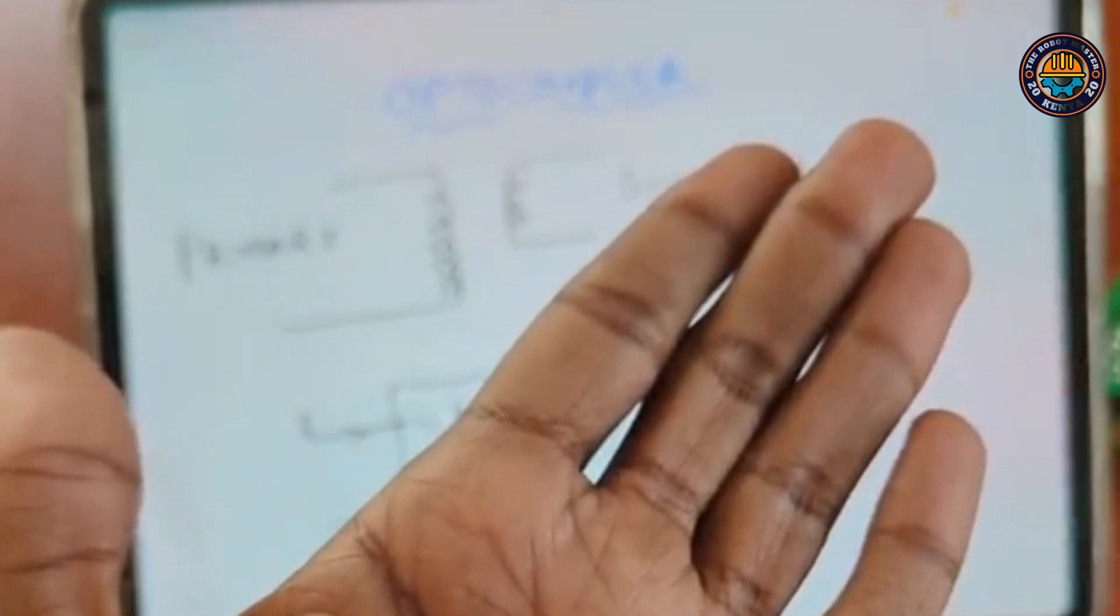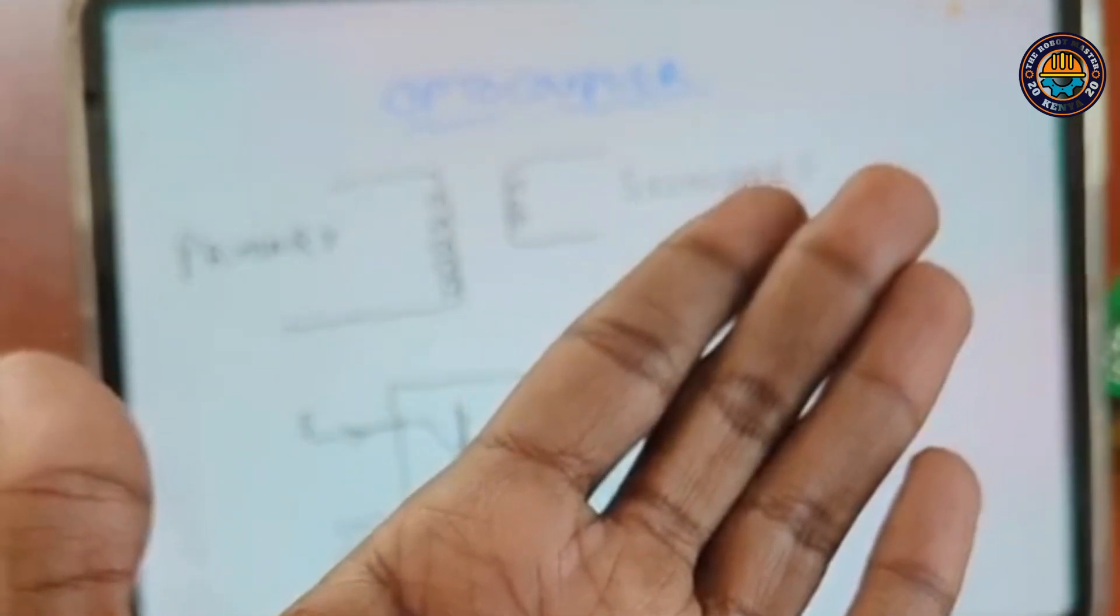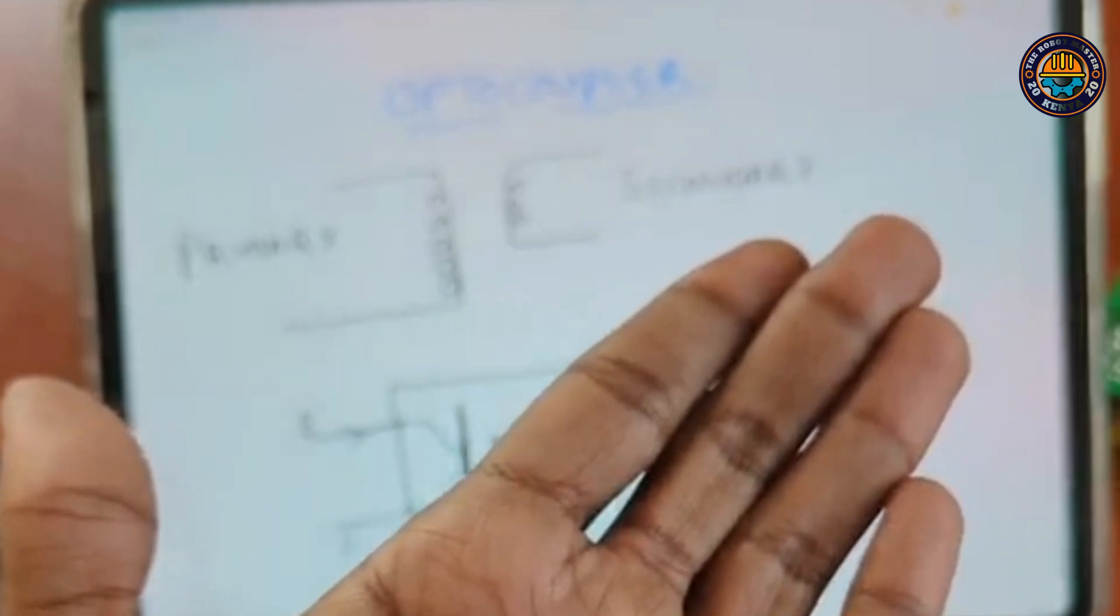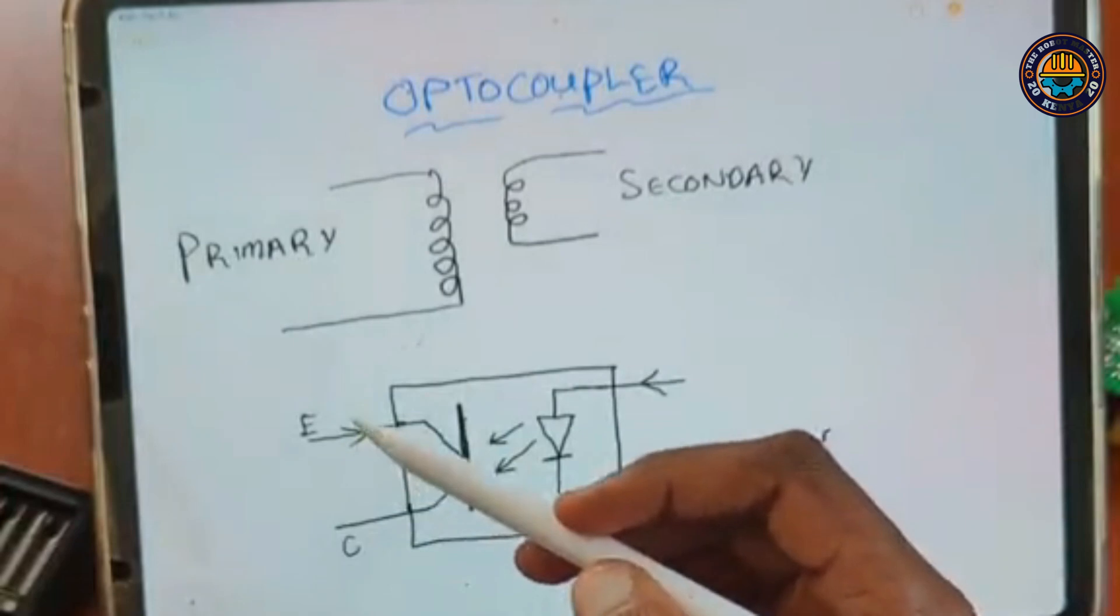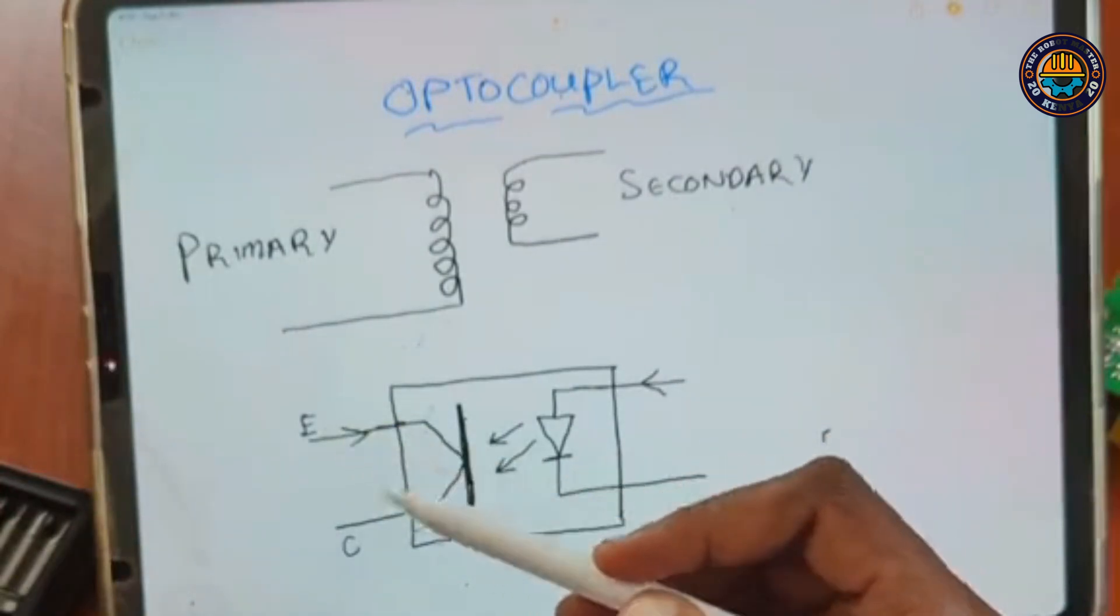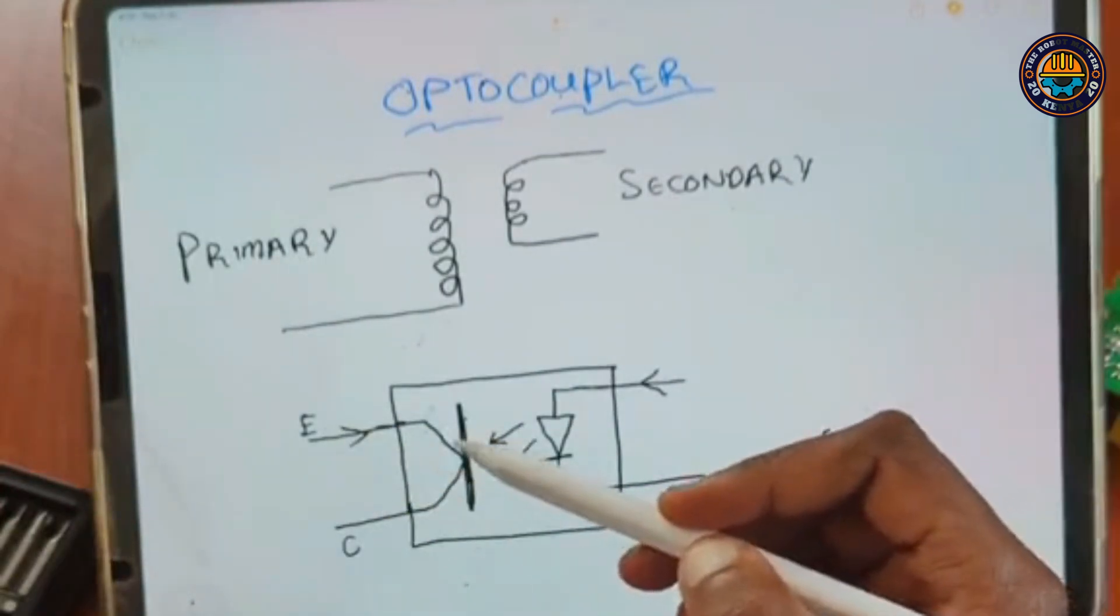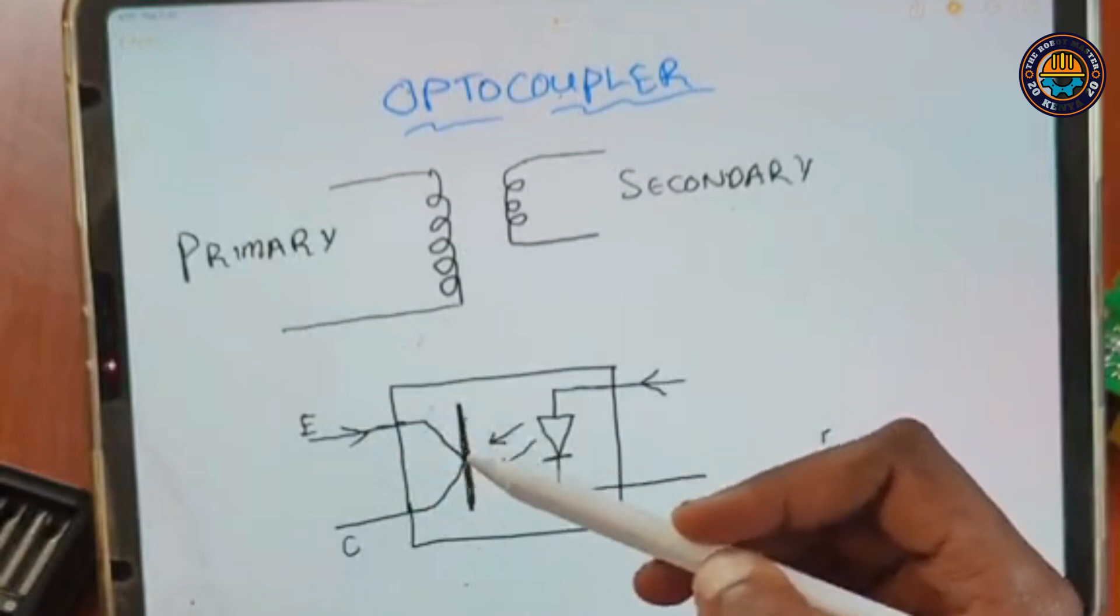So when you come with a small current on the base, the switch between the emitter and collector is closed. So when you come with an optocoupler, we have the emitter, we have the collector, and this is the base.